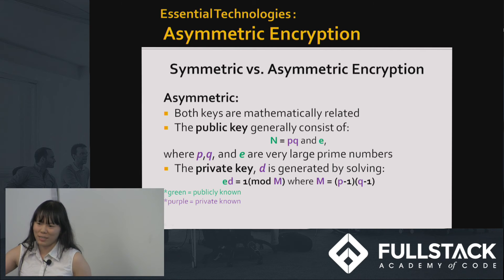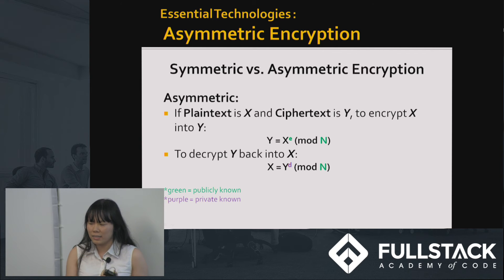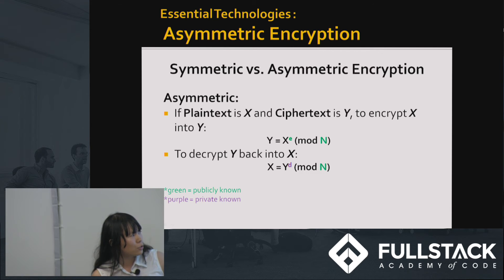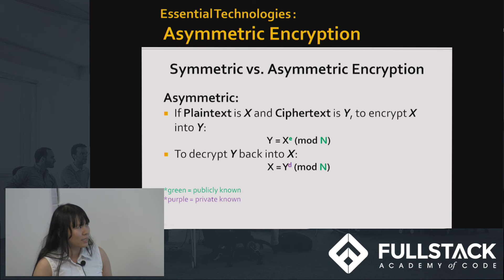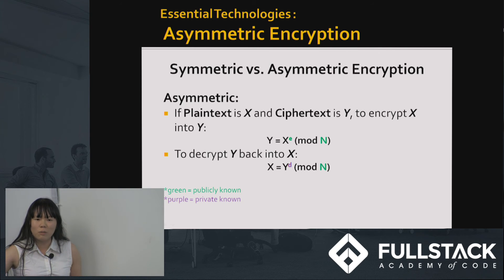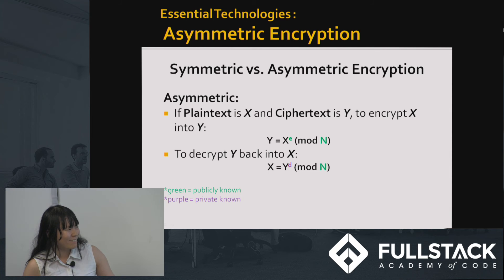Eventually this might change one day. How this works is: if you have plaintext X and ciphertext Y and you want to encrypt plaintext X, you put it through this operation using simple modular arithmetic. To decrypt, you do the same thing except you replace E with D. Because we don't have the computational power to factorize N for P and Q, which are needed to generate D, you can't decrypt unless you already know what D is.